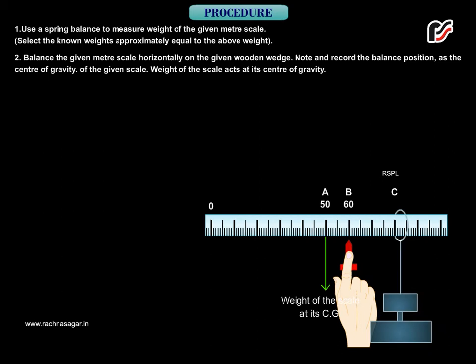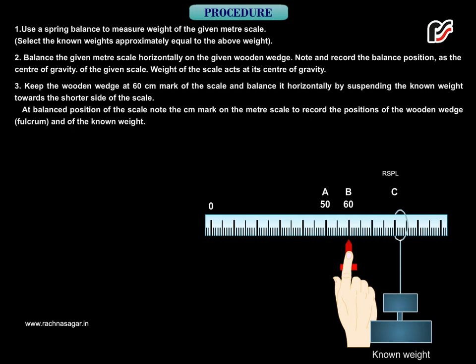Balance the given meter scale horizontally on the given wooden wedge. Note and record the balance position as the center of gravity of the given scale. Weight of the scale acts at its CG. Keep the wooden wedge at 60 cm mark of the scale and balance it horizontally by suspending the known weight towards the shorter side of the scale.